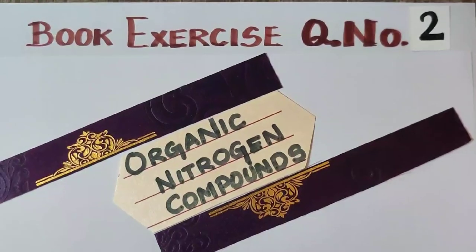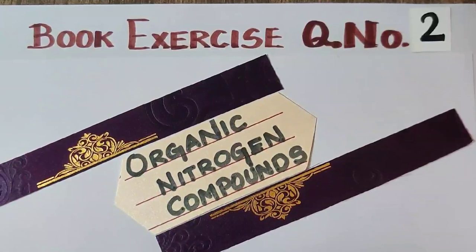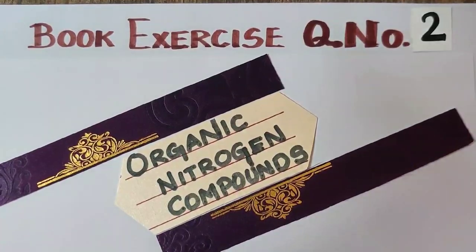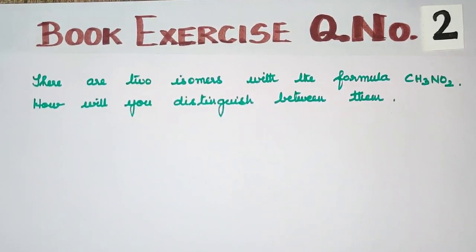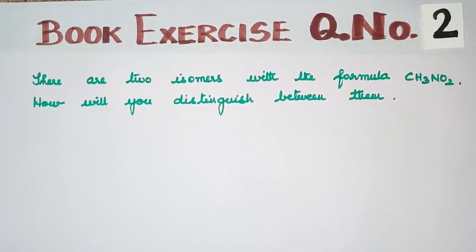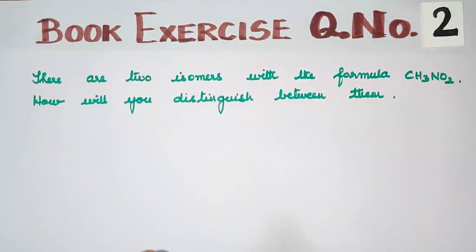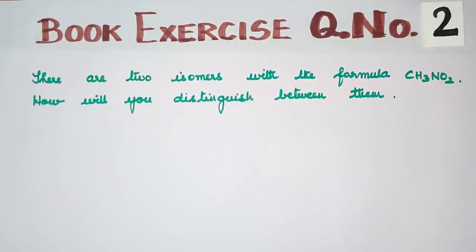Hello students. Vanakam. Organic Nitrogen Compounds chapter book exercise questions, question number 2 - in this video we will deal with it. The first question: there are 2 isomers with the formula CH₃NO₂. How will you distinguish between them? CH₃NO₂ is the simplest nitro alkane formula, that is nitromethane. These 2 isomers are functional isomers - nitro and nitrite.